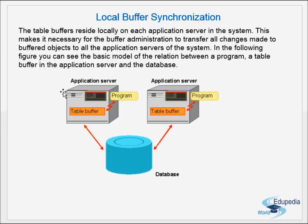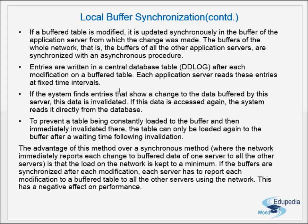This applies to all application servers — the first time data is fetched it comes from the database and is kept in the table buffer of the application server. If a buffered table is modified, it is updated synchronously in the buffer of the application server from which the change was made. The buffers of all other application servers are then synchronized using an asynchronous procedure.